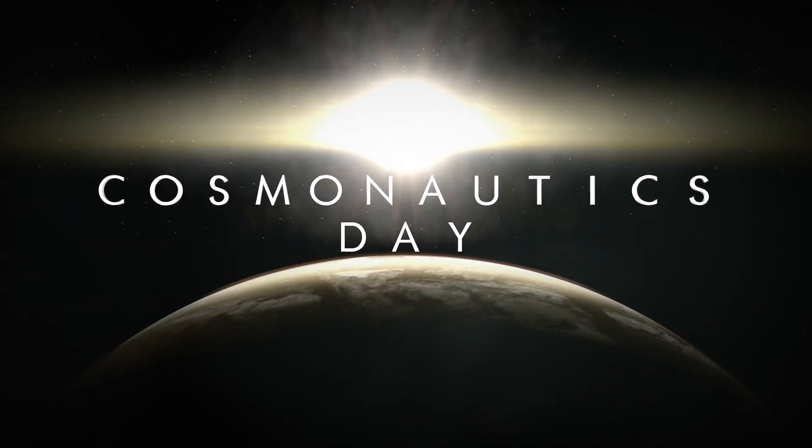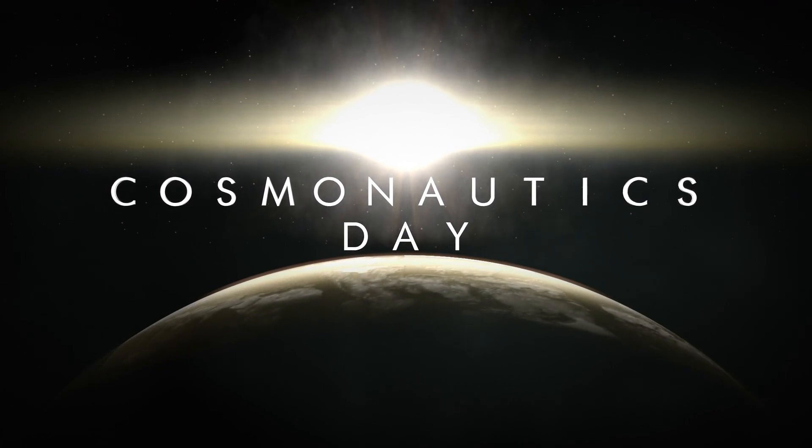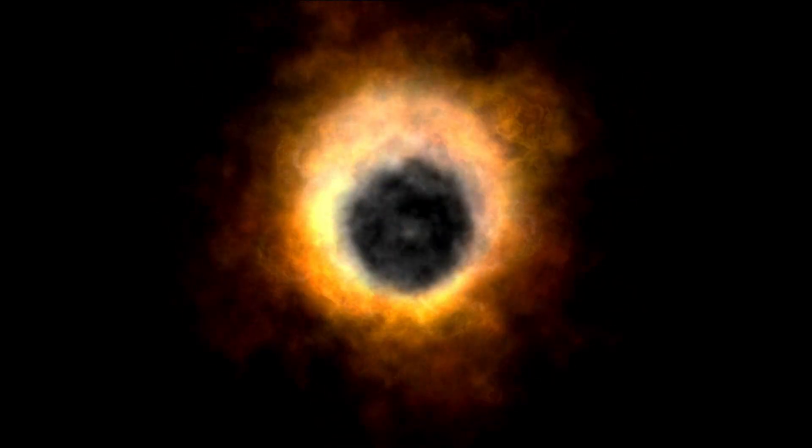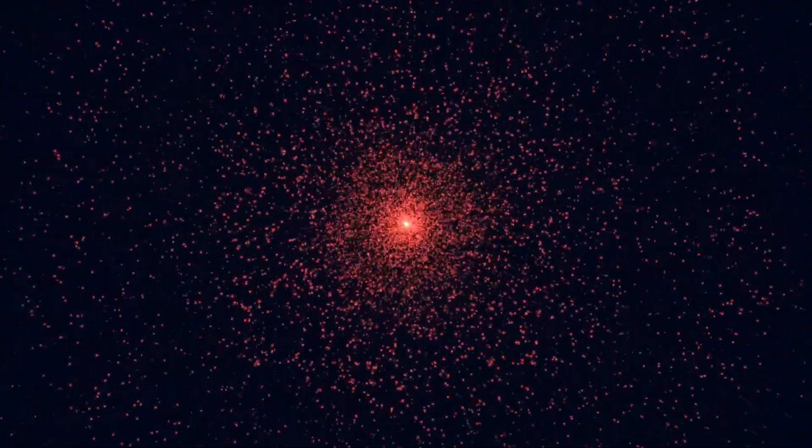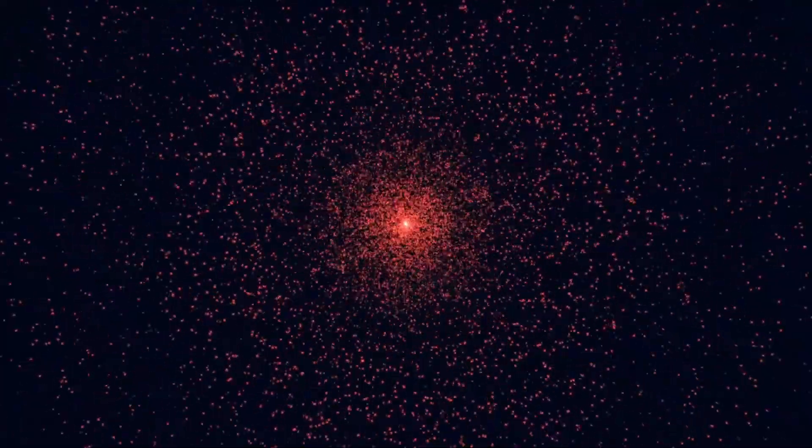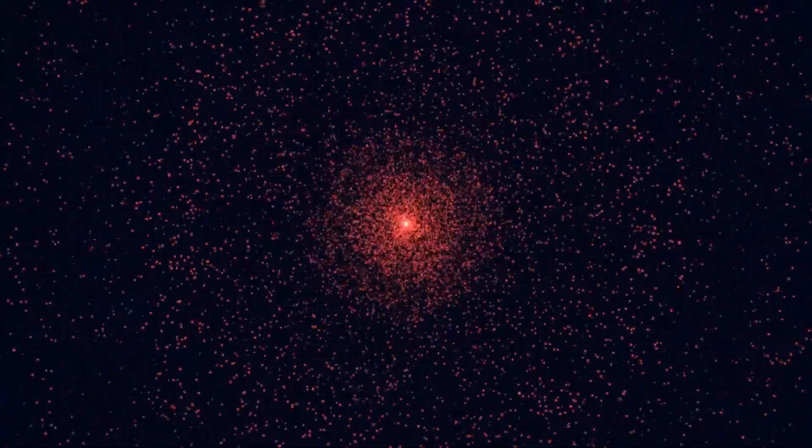While red dwarfs are stable over time, they tend to be more active than the sun, frequently emitting powerful solar flares and radiation bursts. These outbursts can strip away the atmosphere of a planet or bombard it with harmful radiation, potentially making it difficult for life to develop or survive.